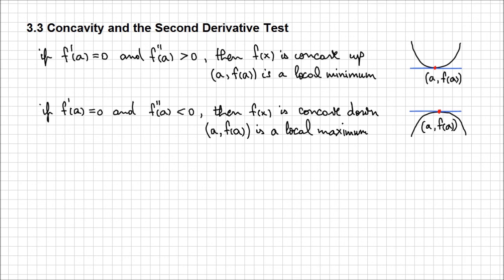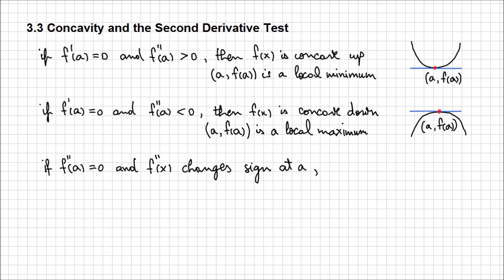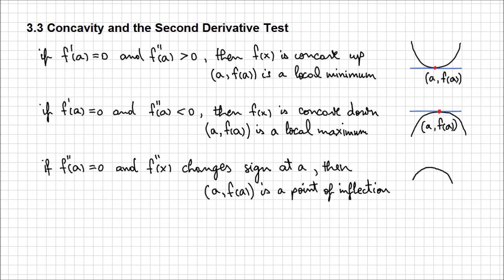The second derivative test also tells us that if the second derivative at point a is zero, and the second derivative of f(x) changes sign when x increases from the left of a to the right of a, then the point a, f(a), is a point of inflection. Graphically, it's going to look something like that.